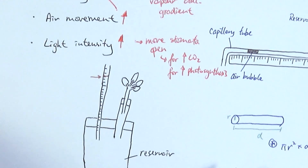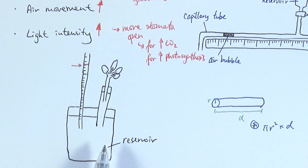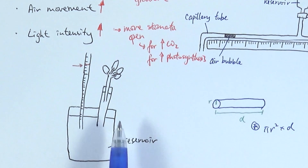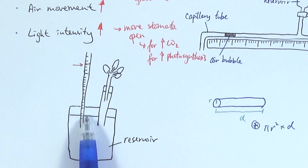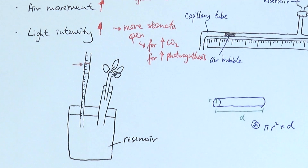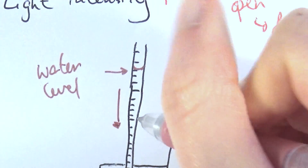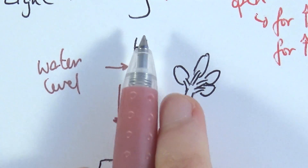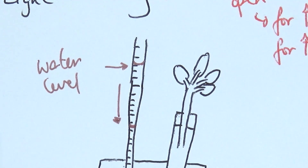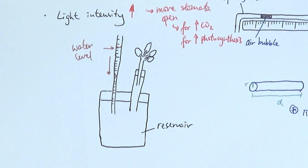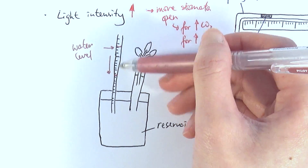Another setup commonly used in schools to replace the classic potometer — since it's quite difficult to set up — is a simpler alternative. You have a beaker as a water reservoir, the shoot attached to it, a capillary tube, and a syringe to reset the water level. You set the water level at a starting point, allow it to run for a set time, and measure how much the water level drops. That drop directly tells you the volume of water taken up. The graduated capillary tube directly gives you the volume, so you don't need to try to get an air bubble in.